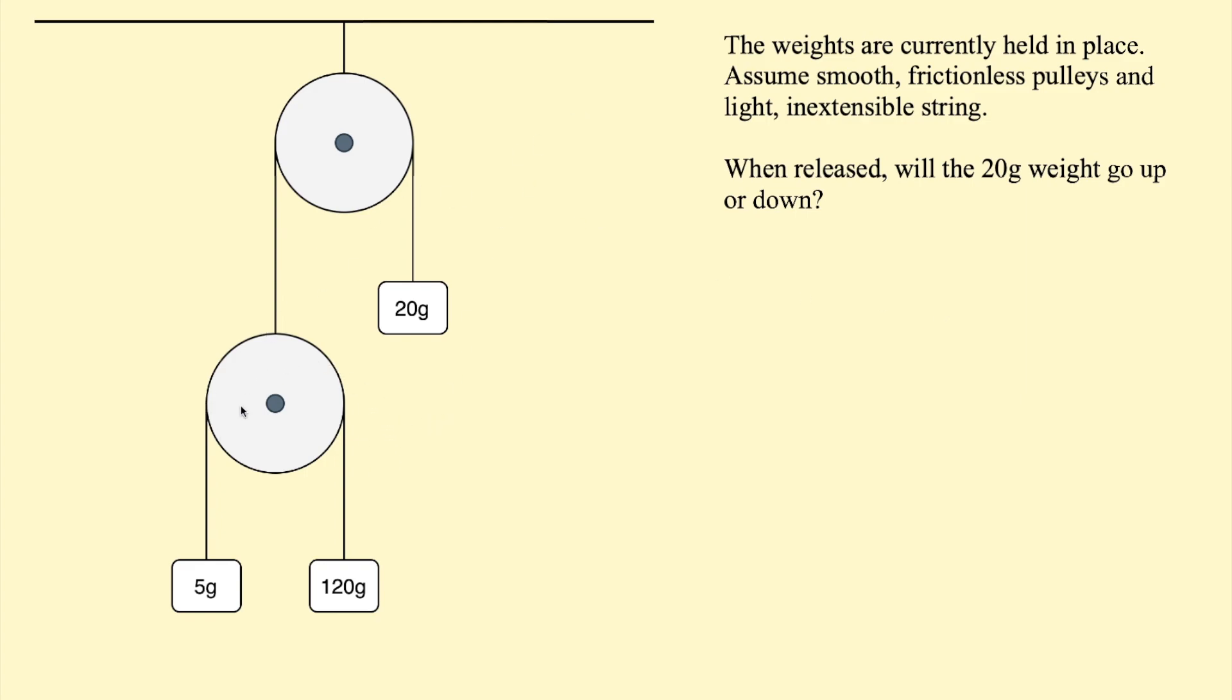On the lower pulley, we have two weights attached by a string. One of the weights is 5 grams, the other weight is 120 grams. This lower pulley is attached by a string to another pulley, and that is attached to a weight of 20 grams.